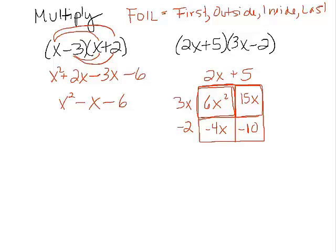And then again, we'll just combine our terms here for 6x squared. Let's see, these combine to plus 11x, and then we have minus 10.